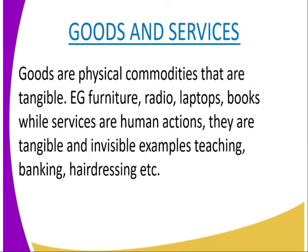We start by looking at what are goods and services. Goods are physical commodities that are tangible — anything that you can touch. You can change the ownership. That is what we refer to as goods. Examples include furniture, radio, laptops, books, and bananas. These are things that you can touch.